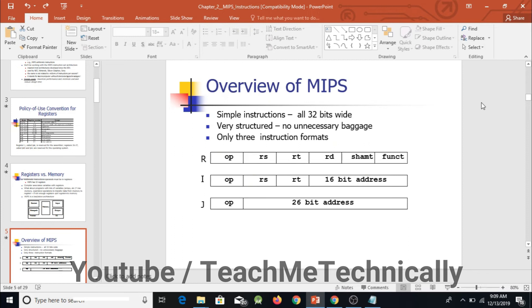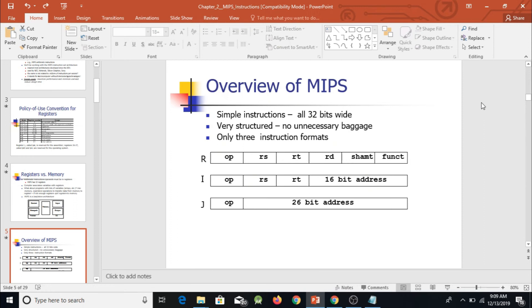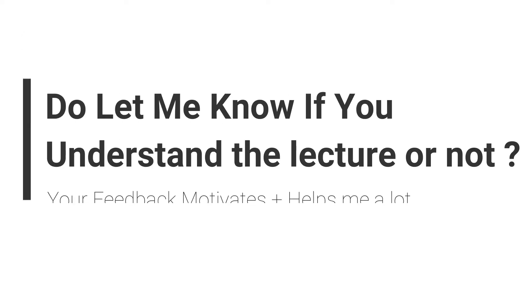In MIPS we have three types of instructions: number one is R-type instruction, number two is I-type instruction, and number three is J-type instruction. All instructions in MIPS are 32 bits wide. We will be discussing all three instruction types in detail in upcoming videos.